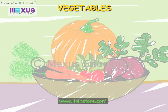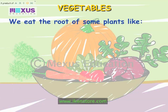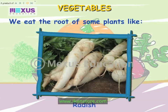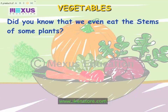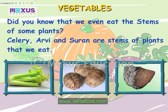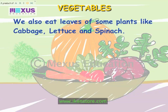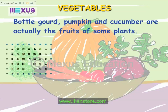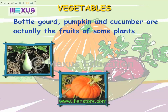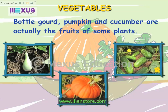Vegetables. We eat the root of some plants like radish, carrot and turnip. Did you know that we even eat the stems of some plants? Celery, arvi and suran are stems of plants that we eat. We also eat leaves of some plants like cabbage, lettuce and spinach. Bottle gourd, pumpkin and cucumber are actually the fruits of some plants.